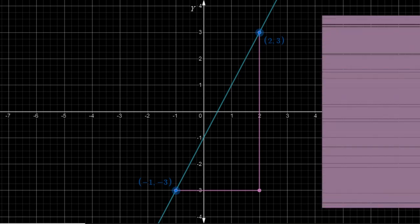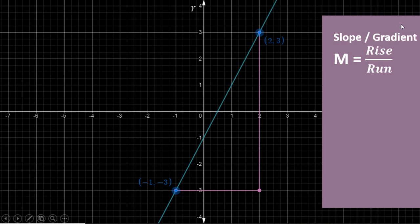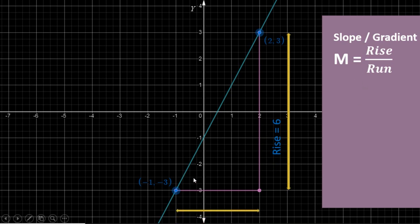For this example, I have picked a point where the value of x is −1 and y is −3, and another point where x is 2 and y is 3. You can pick any two points on the line. After picking the points, we're going to use the formula: slope (represented by m) equals rise over run. By rise, we mean the distance traveled along the y-axis between the two points — there are 6 boxes. By run, we mean the distance traveled along the x-axis, which is 3. So the slope is 6 divided by 3, which equals 2.